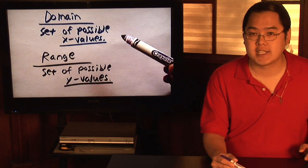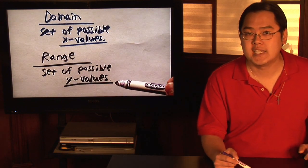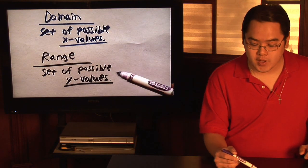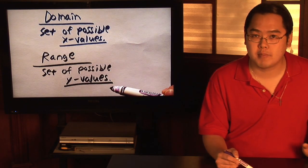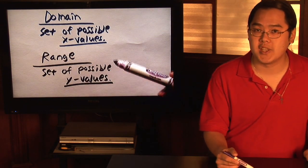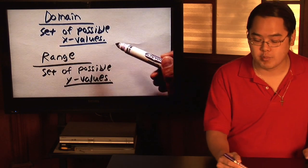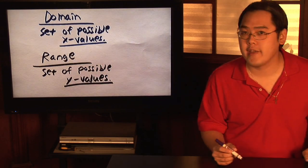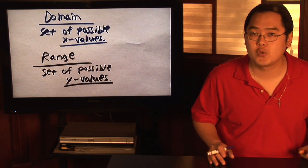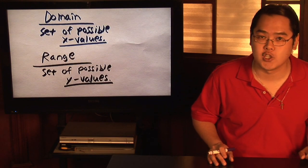Oftentimes, you might have heard that x is the independent variable and y is the dependent variable. In other words, what numbers the y can be really depends on what numbers the x is going to be. When you plug in the x values, you will get your y values. So domain is what's allowed for x and range is what's allowed for y.